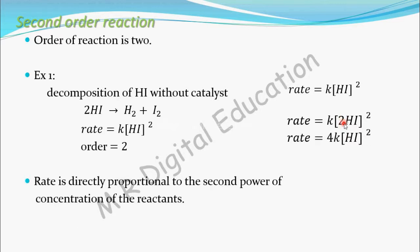Take the 2 outside: 2 to the power 2, that is 2 squared, equals 4. Keep K and [HI]² as they are. Now compare these two equations: when the concentration of the reactant is increased 2 times, the rate increases 4 times — that is, 2² times.